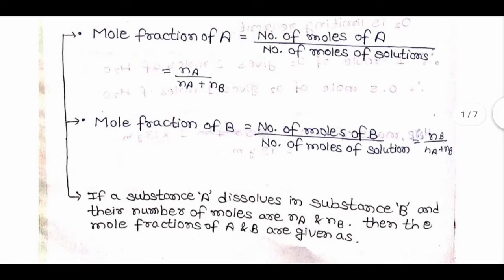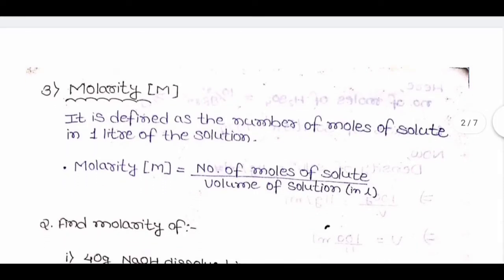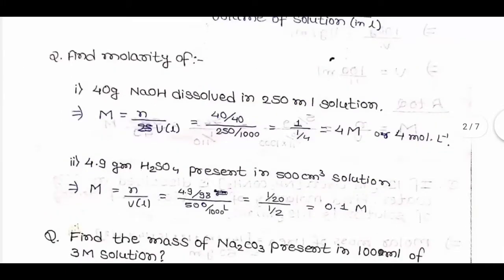Molarity, denoted by capital M, is defined as the number of moles of solute in one liter of solution. Molarity = number of moles of solute / volume of solution in liters. Question: find the molarity of 40 grams of NaOH dissolved in 250 mL of solution. Number of moles = 40/40 = 1 mole. Volume in liters = 250/1000 = 1/4 L. Therefore molarity = 1 / (1/4) = 4 M.